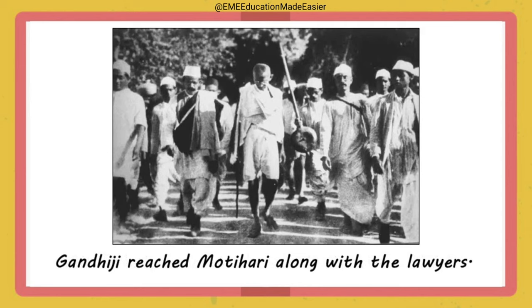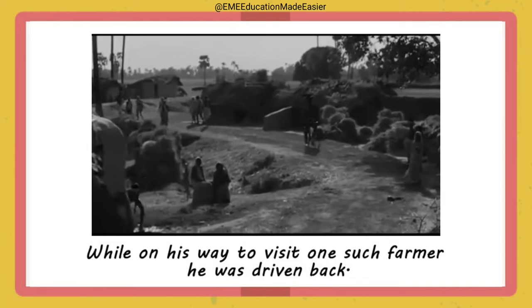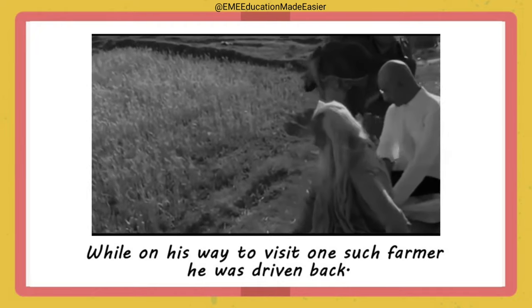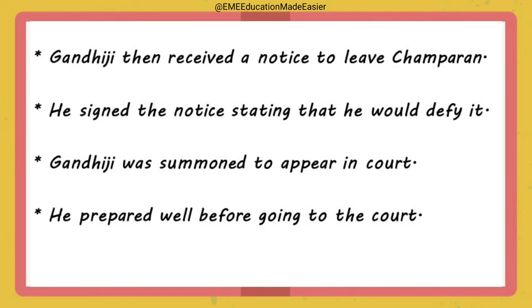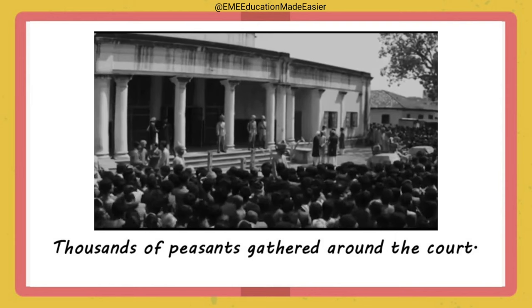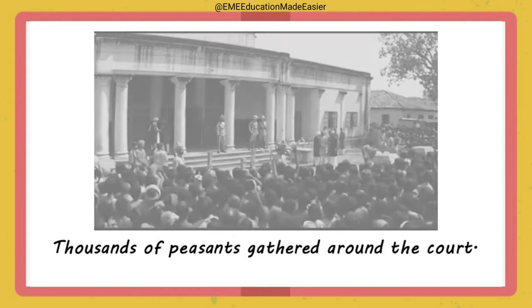Instead of leaving, Gandhiji left for Motihari — the capital of Champaran — with several prominent Indian lawyers. Crowds of peasants greeted them at the station. Gandhiji began investigations into the system of exploitation of ignorant farmers. During one of his visits to an affected farmer, he was stopped and driven back to town. An official notice was served ordering him to leave Champaran. Gandhiji signed the notice but put a remark that he would disobey it. He was summoned to appear in court the next day. He stayed awake the whole night making preparations. Thousands of peasants gathered around the court, and officials had to seek Gandhiji's help to control them.